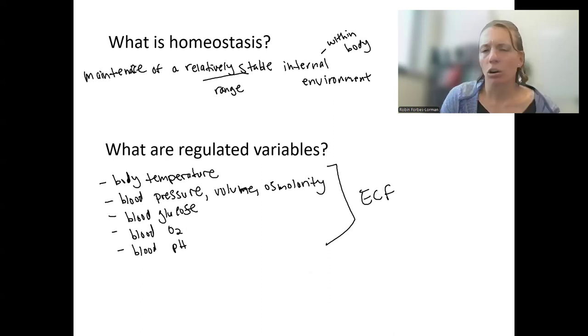What about heart rate? Do you think that's a regulated variable? Our body regulates heart rate, but it is not a regulated variable that's regulated homeostatically. Heart rate is not homeostatically regulated. It's designed to dramatically change in order to maintain these other variables. Blood pressure being the most clear example - if you increase heart rate, blood pressure increases. You decrease heart rate, blood pressure decreases.